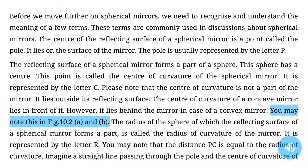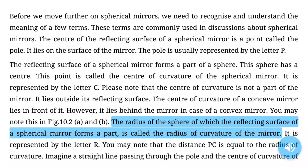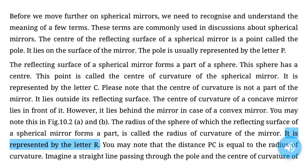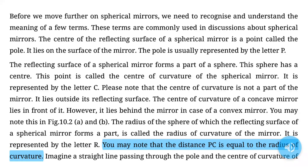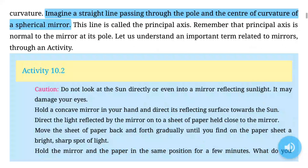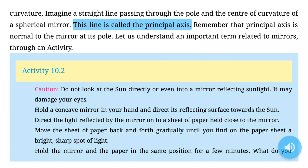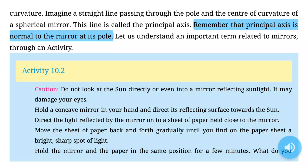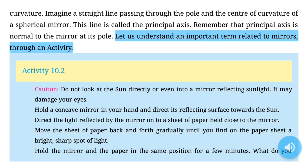The radius of the sphere of which the reflecting surface of a spherical mirror forms a part is called the radius of curvature of the mirror, represented by the letter R. Note that the distance PC is equal to the radius of curvature. An imaginary straight line passing through the pole and the center of curvature of a spherical mirror is called the principal axis. The principal axis is normal to the mirror at its pole.